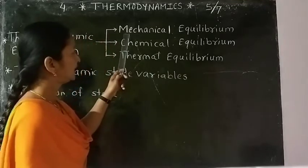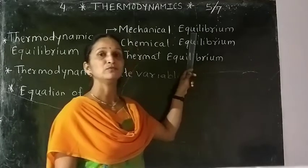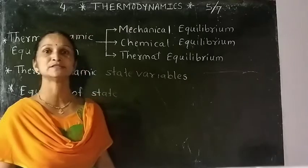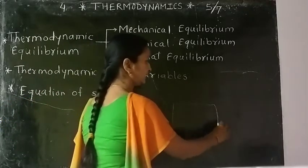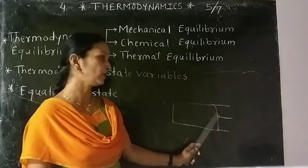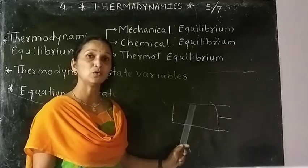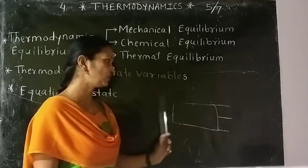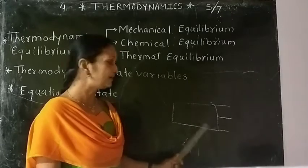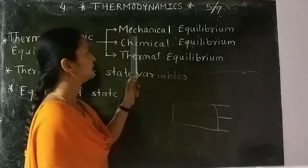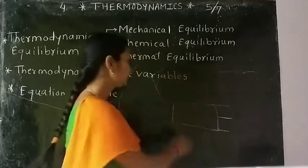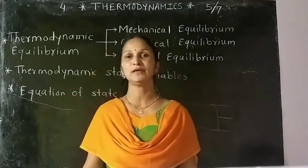The system is said to be in mechanical equilibrium if there is no unbalanced force within the system or between the system and its surroundings. For example, consider gas enclosed in a cylinder fitted with a movable piston. If there are no unbalanced forces within the system or between the system and its surroundings, then it is in mechanical equilibrium. In mechanical equilibrium, pressure is the same throughout the system.